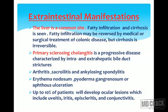Primary sclerosing cholangitis is a progressive disease characterized by intra- and extra-hepatic bile duct strictures. You can also have arthritis, sacroiliitis, and ankylosing spondylitis. Skin lesions include erythema nodosum, pyoderma gangrenosum, or aphthous ulceration. Up to 10% of patients will develop ocular lesions including uveitis, iritis, episcleritis, and conjunctivitis.